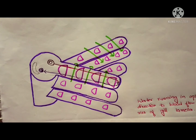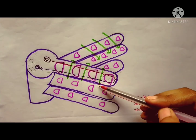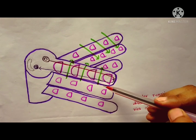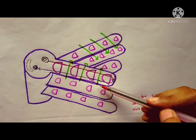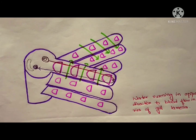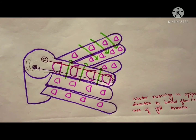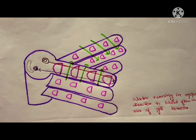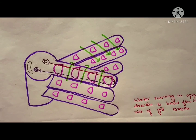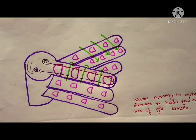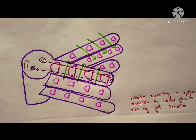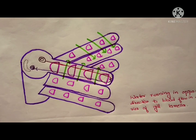This is called the counter current mechanism — water flows in the opposite direction to blood flow through the gills. This mechanism maximizes oxygen extraction. I hope you liked this video. If you liked it, please like and subscribe. Thank you.